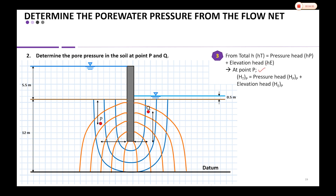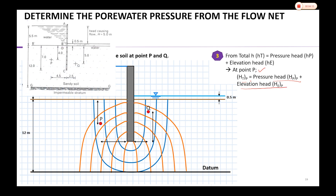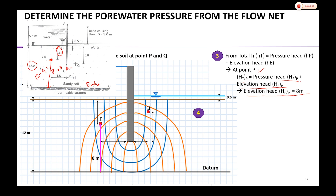At point P, the total head H_T(P) equals pressure head H_P(P) plus elevation head z_P. For the elevation head, referring to the diagram, the datum is set at the bottom, and the total depth is 12 meters. Since P is 4 meters from the top, the elevation head is 12 minus 4 = 8 meters from the datum.